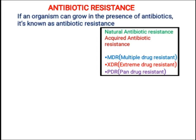Then we have PDR — pan drug resistant bacteria۔ وہ بیکٹیریا جو تمام classes کو resistant ہے — وہ تمام classes جو اس کے against use ہوتی ہیں to kill that bacteria — ان تمام classes کو resistant ہے، then it is known as PDR, means pan drug resistant bacteria.